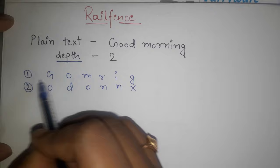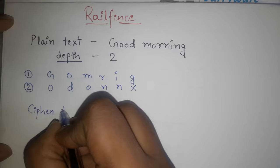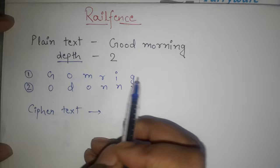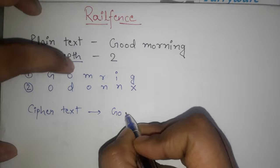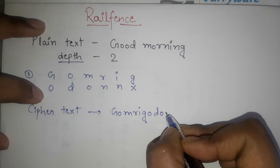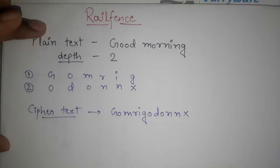Now we need ciphertext. How can we get ciphertext? Ciphertext row by row we can write it: G-O-M-R-I-G, O-D-O-N-N-X. Simple. It is very simple ciphertext.